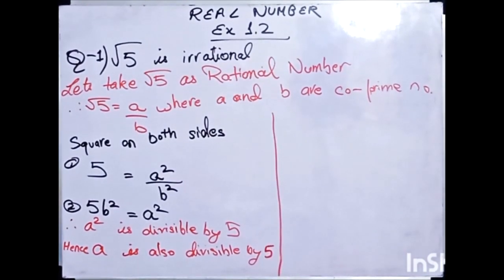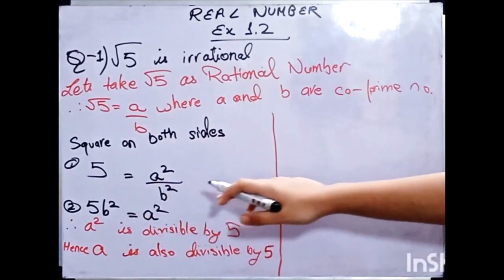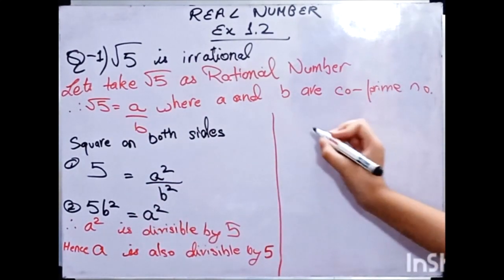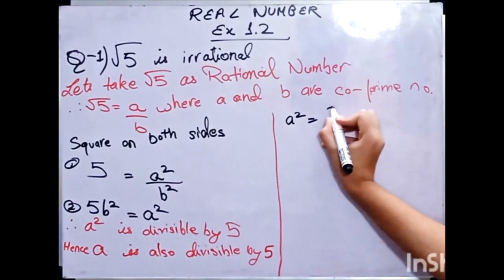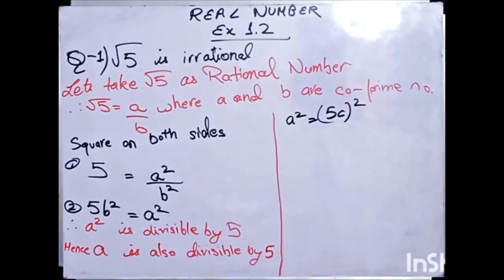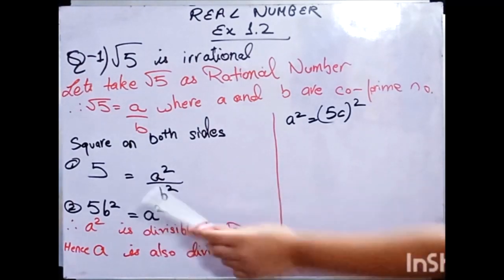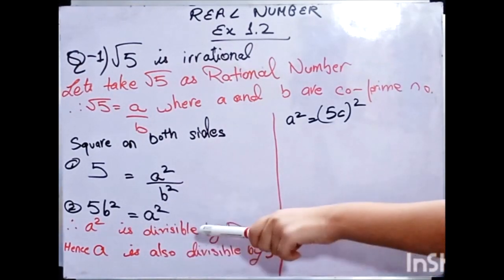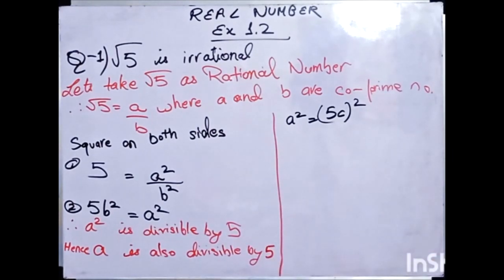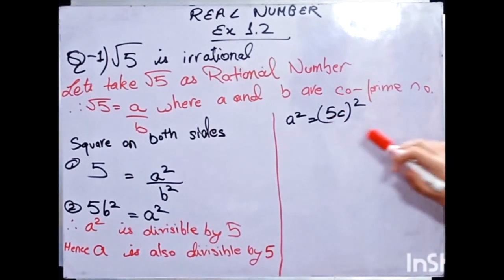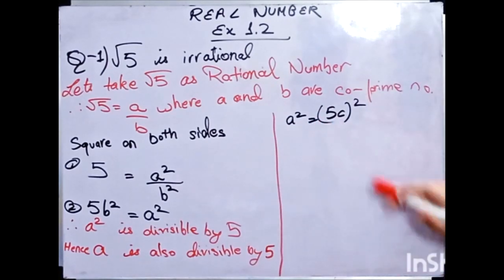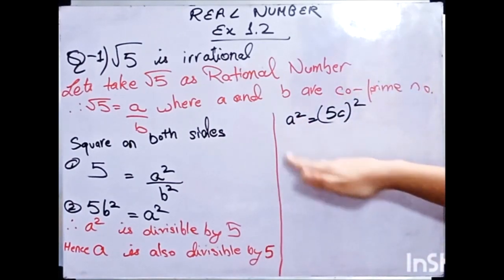Now we will continue the sum from here. Since A is divisible by 5, we will consider A equal to 5C, where C is a natural number. So A squared is equal to 5C whole squared, which gives A squared equal to 25C squared.